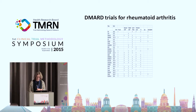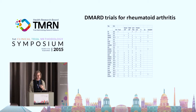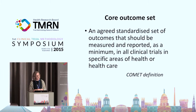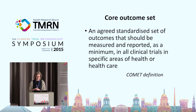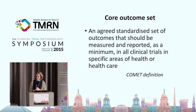There is overwhelming evidence now that there have been problems with outcomes in trials. One possible solution to reduce these sorts of problems is known as a core outcome set — an agreed, standardized set of outcomes that should be measured and reported as a minimum in all clinical trials in specific areas of health or health care.